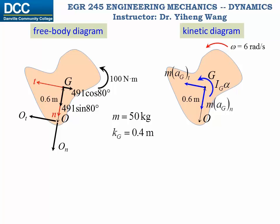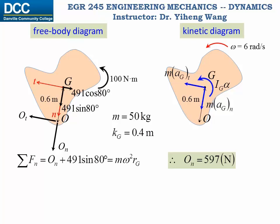Now we write the equations of motion. First, the resultant force along the normal direction includes the unknown On force and the normal component of the weight force, equaling M times the linear acceleration along the normal direction, which is omega-squared·RG. With omega equal to 6 rad/s and RG equal to 0.6 m, this equation has only one unknown, On, which can be solved. Next, the resultant force along the tangential direction includes the unknown Ot and the tangential component of the weight force, equaling mass times alpha·RG, which reduces to 30·alpha. This equation has two unknowns, Ot and alpha, so we need the third equation.